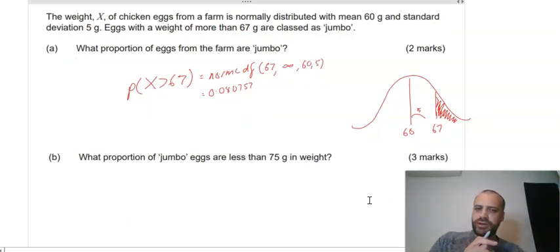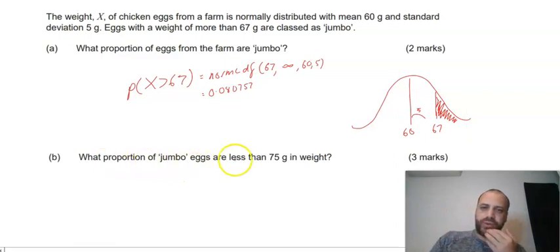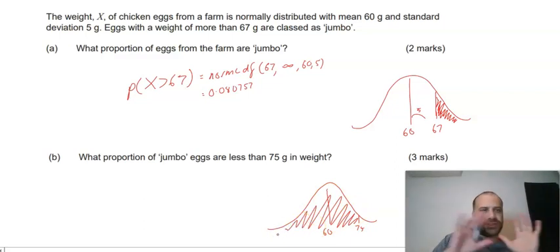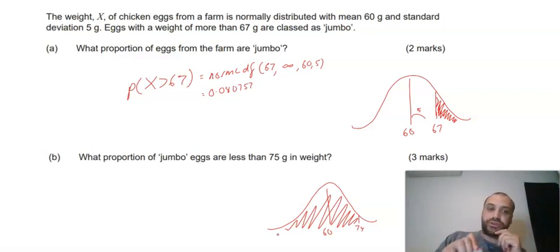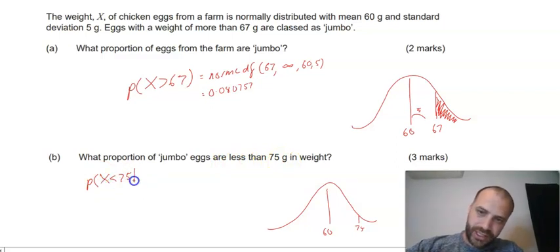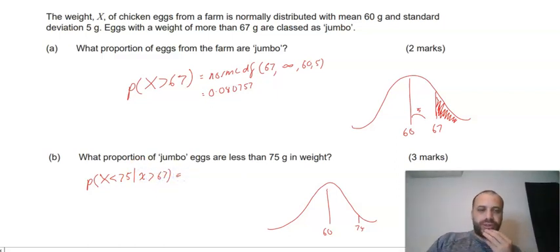Now this next question, it's a real tricky question here, because it feels easy to begin with. What proportion of jumbo eggs are less than 75 grams in weight? Now a lot of people are going to see this question and draw the same normal distribution they did before, 60, and they're going to write in 75 over here, and they're going to want to know all of this. But that's not what's happening here. This is actually a conditional probability question. It's going to be easiest for us if we write this down as a conditional probability before we get started.